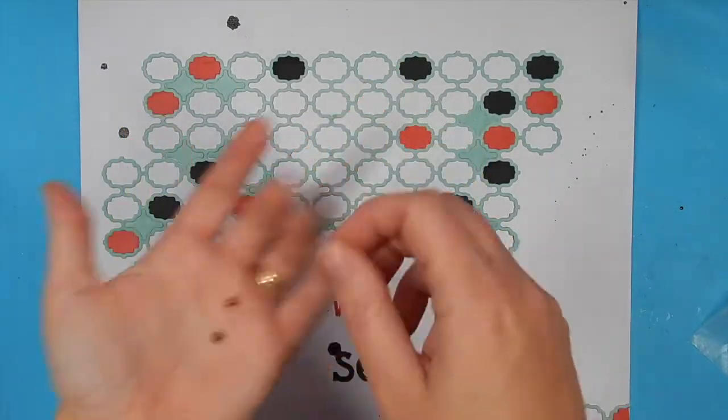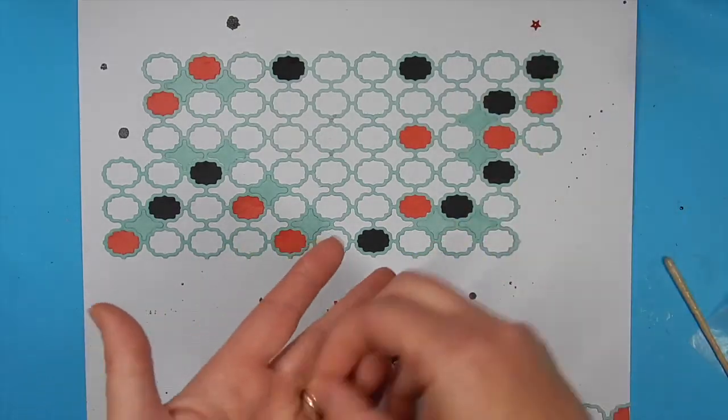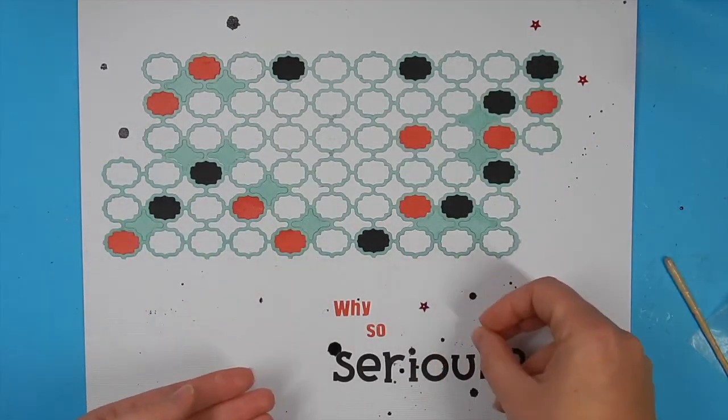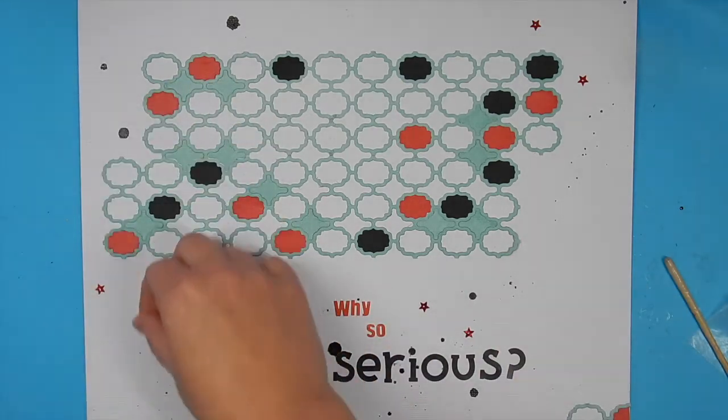I've added my title and now I've got some tiny red star sequins that I'm going to place around my page as well. These add another fun touch of shimmer and another little bit of shape to it as well.